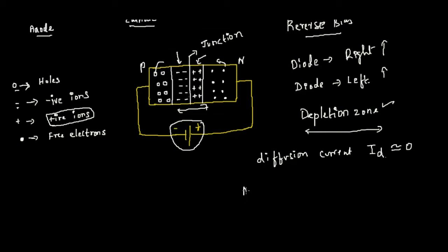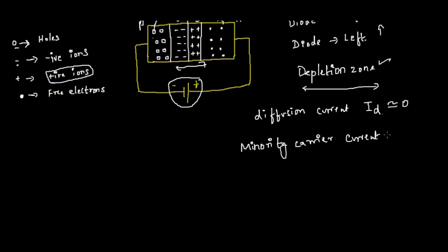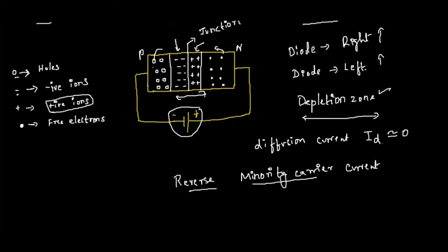Therefore, the minority charge carriers will be making a move. The minority charge carriers are the free electrons in the P-type and the holes in the N-type — they will try to make a move now. The current created by them is the minority carrier current, created by the reverse bias voltage. If they make a move, they will create a current, but that current will also be very very low.